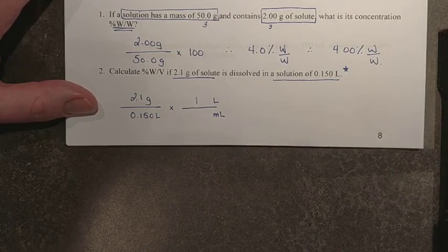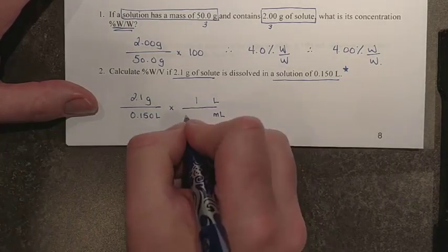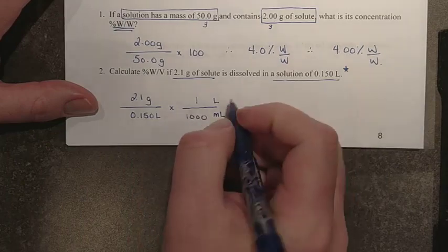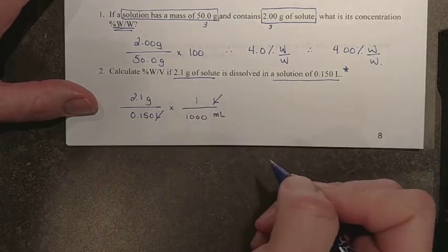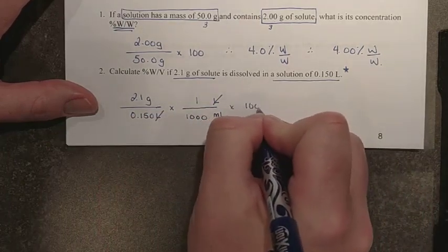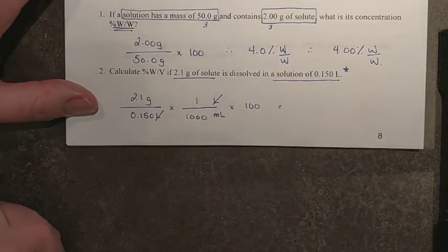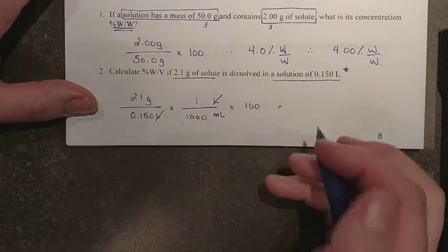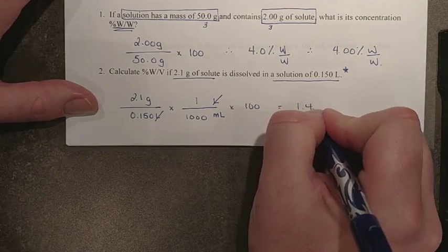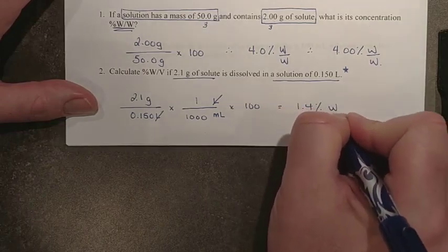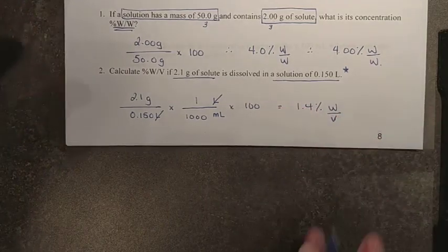And milli means 1 1,000th, so that must mean there are 1,000 mils in every 1 liter. Now I have grams per mil. Now I can multiply by 100 and turn this into percentage. When you run this through your calculator, you will get 1.4%, and we will just put weight by volume to describe it.